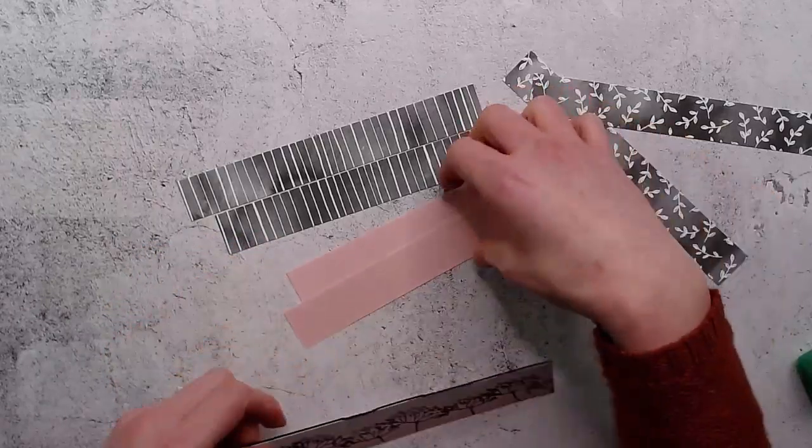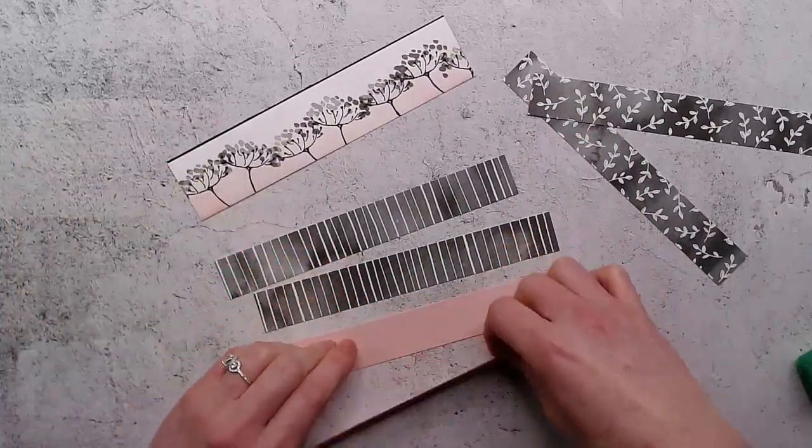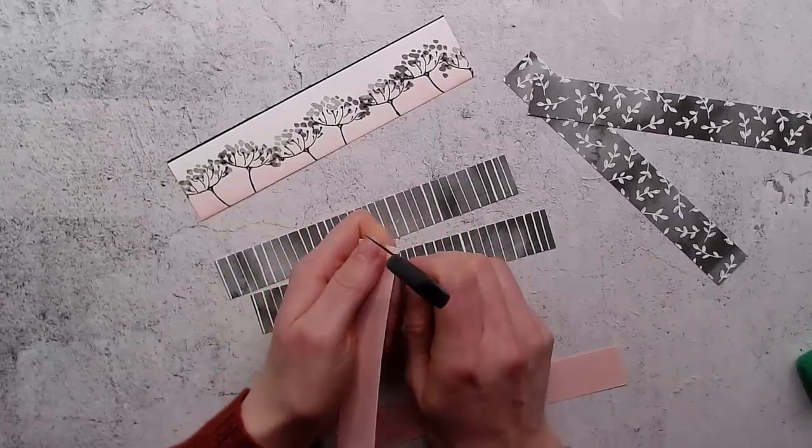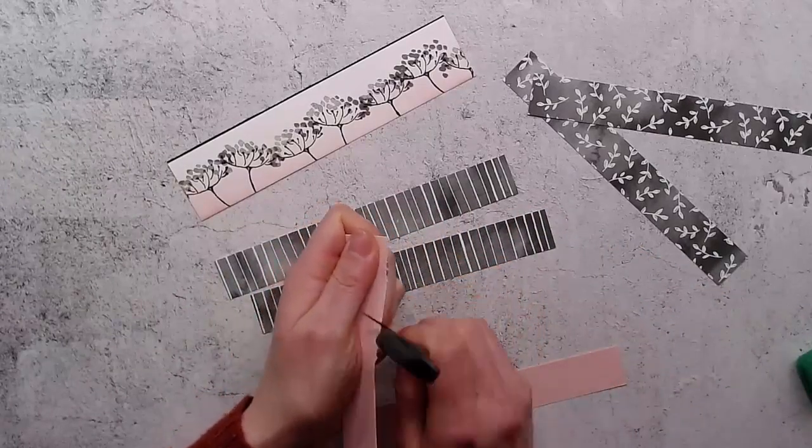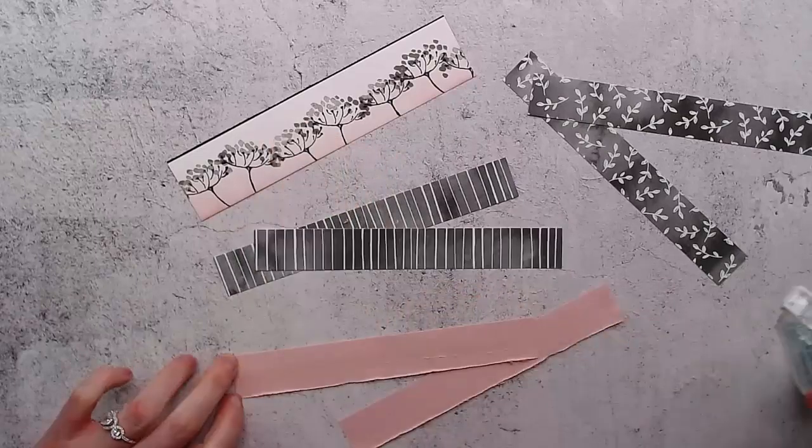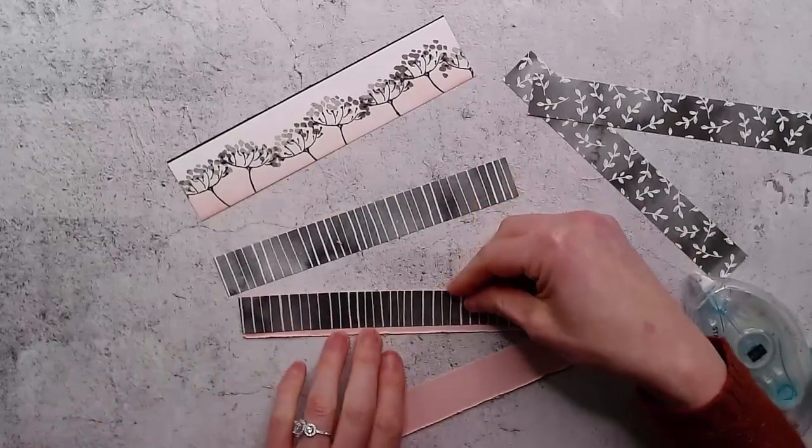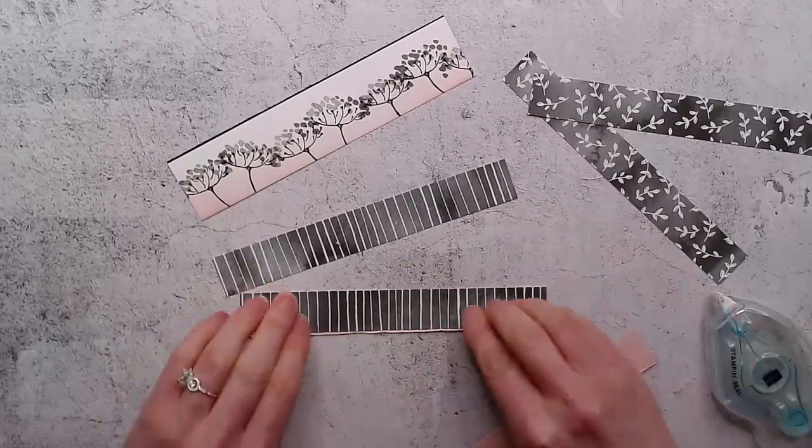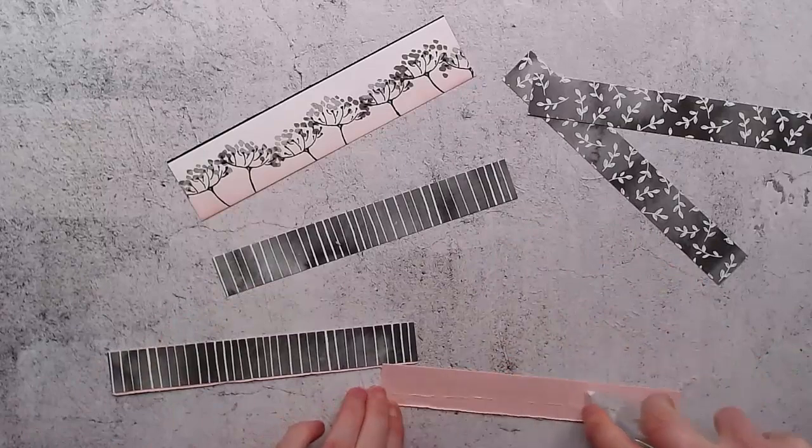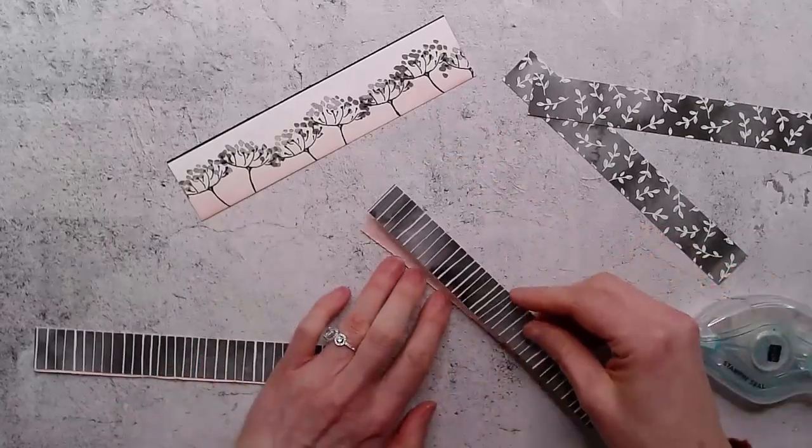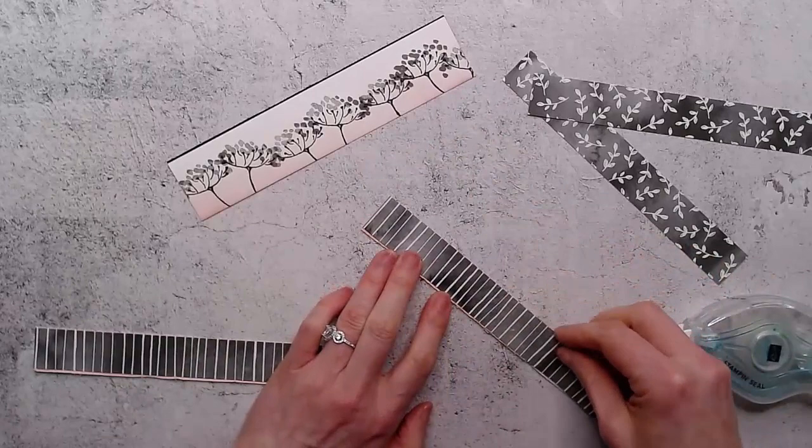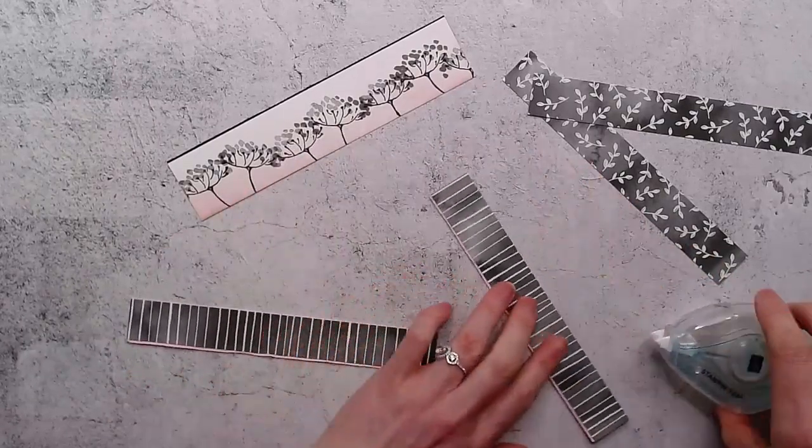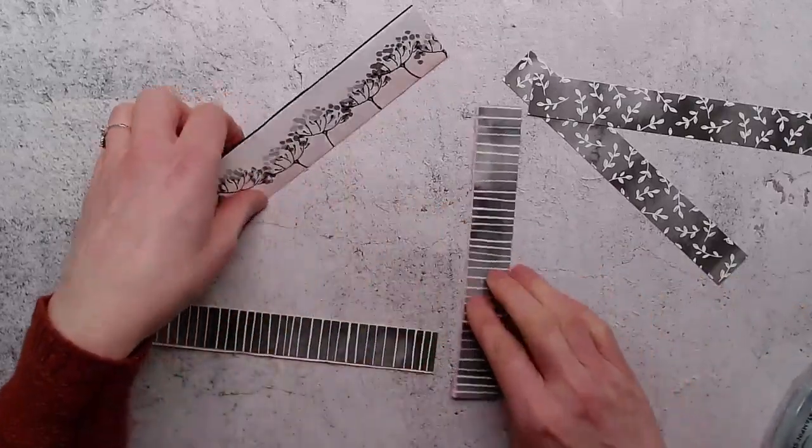These pieces I'm going to adhere to the striped pieces. I like to take my scissors and just rough up these edges here. I'm just going to do the same thing here so that you see the smallest little line of pink or blushing bride on these pieces.